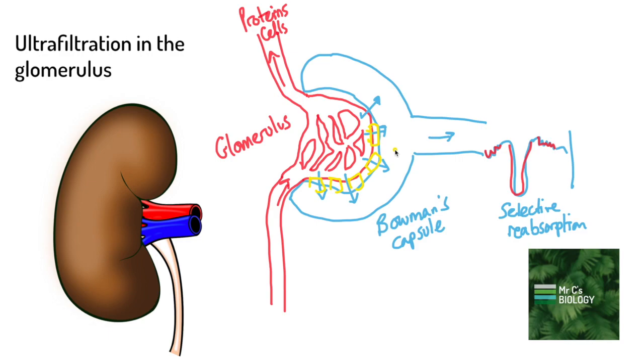So there's lots of space for the things that are going to be able to fit through to come out. There's also going to be the right kind of size so that cells and things can't come through.